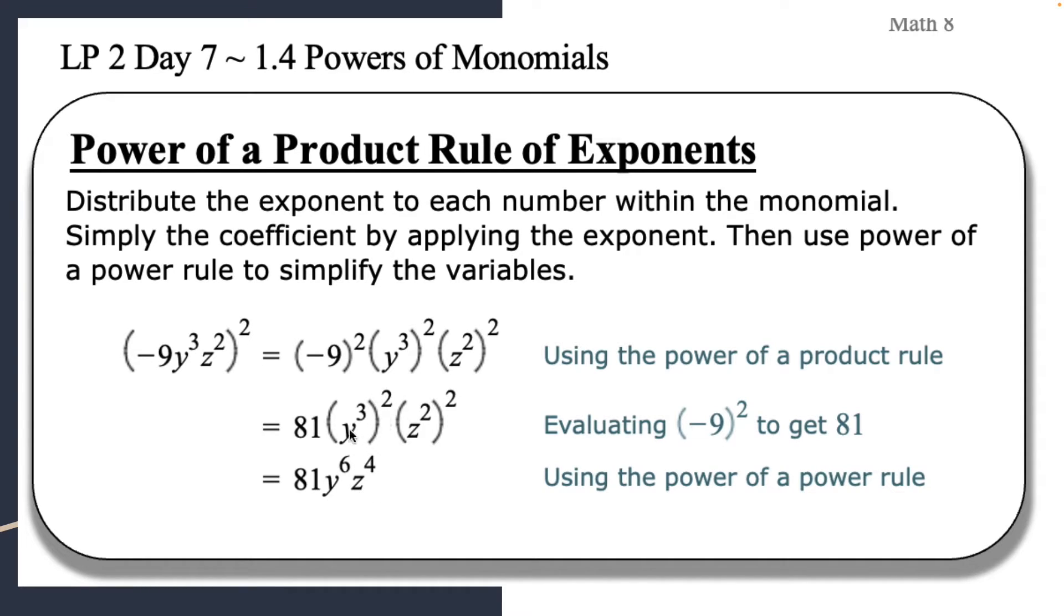And then down here, all of a sudden, we don't have all these parentheses and these extra powers. So we have 3 times 2 is 6. Because what this 2 means is I'm doing y to the third power 2 times. So y to the third and y to the third, well that means I have 3 y's in the first one, 3 y's in the second one. So total I have 6. So instead of expanding it on this one, we're just going to do multiplication. It's a very fast way of simplifying. So 3 times 2 we get 6.